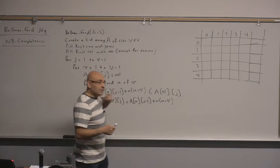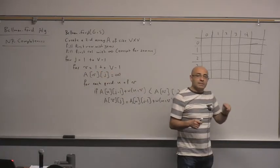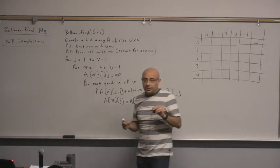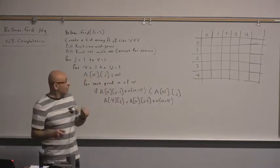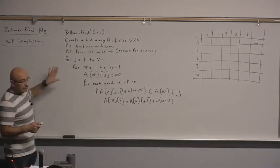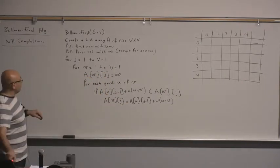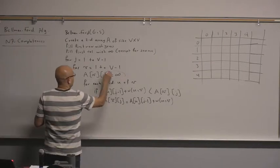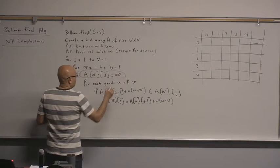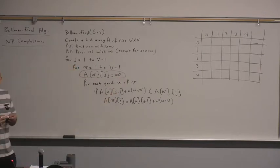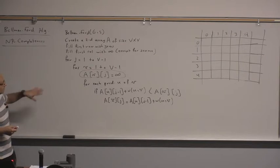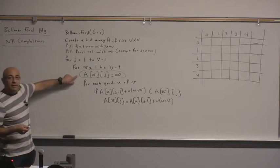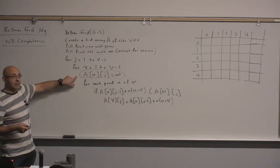There is an algorithm that solves the single source shortest paths problem when there are negative edge weights. We wrote the code last time, and one thing that we missed last time is this line. We can skip this line if we initialize all array elements to infinity in the beginning.